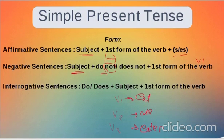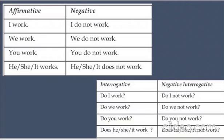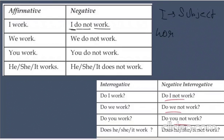For interrogative (question) sentences in Simple Present, 'do' or 'does' comes first, then the subject, then V1. For example: 'I work' (affirmative), 'I do not work' (negative), 'Do I work?' (interrogative), 'Do I not work?' (negative interrogative). Here 'I' is the subject, 'do not' is placed in the middle, and 'work' is the first form of the verb.